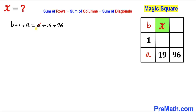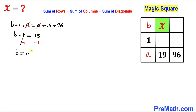So I can write: b plus 1 plus a must be equal to a plus 19 plus 96. Here we can see a and a cancel each other out, so we are left with b plus 1 on the left-hand side. Adding 19 and 96 gives us 115. Subtracting 1 from both sides, our b value turns out to be 114.